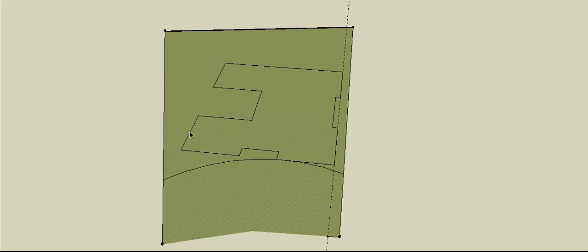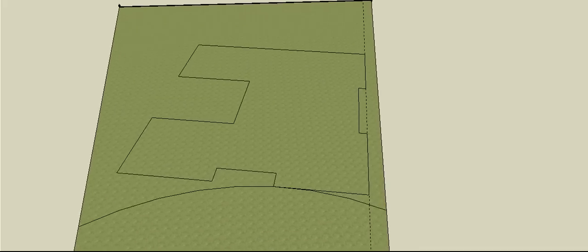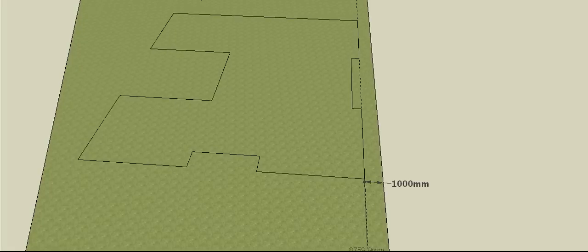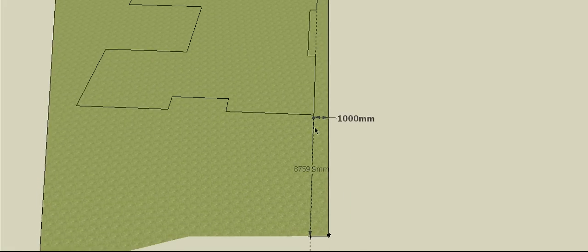When setting out a house, no matter how complicated the house shape or block, as a rule one side of the house will generally be parallel to one side of the block. This makes the configuration of the house and yard a lot easier and means we generally don't have to work out funny angles off the boundary. On your site plan, the architect should indicate a set-out distance from the front of your block and an offset from the boundary, which gives you a starting point.